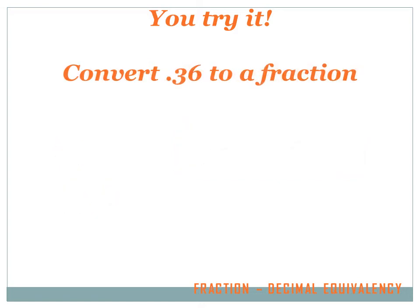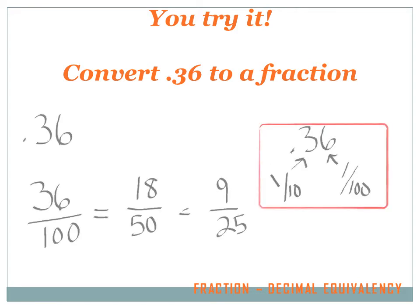Convert .36 to a fraction, and hit the forward arrow when you're done. All right, I want to convert .36 to a fraction. It's real easy. I take the digit, .36, and make it the numerator of my fraction. Now I've got to figure out what the denominator is. .36, where the three is in the tenth spot, and the six is in the hundredth spot. The six is the last digit, so I use the hundredth spot, and it's .36 over .100.